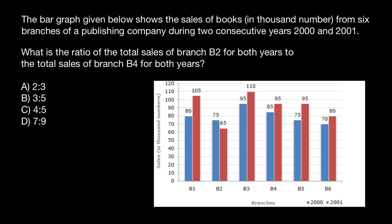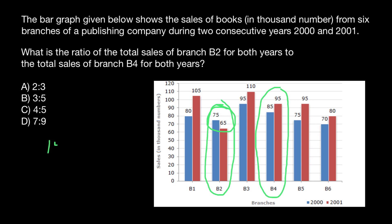So B2 — let me circle this — is going to be one branch which we are going to compare with branch B4, which is here. We are going to compare the total numbers of sales for two years. That gives us 75 plus 65 for branch B2, which is going to be 140.